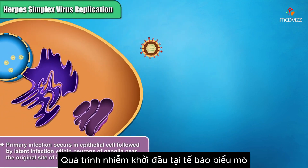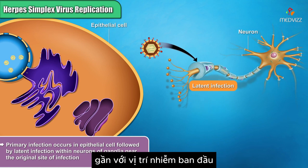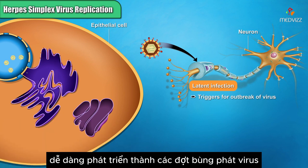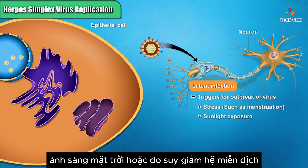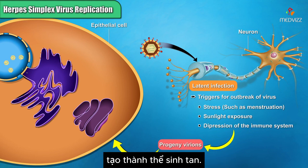The primary infection occurs in epithelial cells, followed by latent infection within neurons of ganglia near the original site of infection. The latent infection of the ganglia later leads to new outbreaks of virus, often triggered by stress, sunlight exposure, or depression of the immune system. Progeny virions travel back to the epithelia, causing lytic infection.